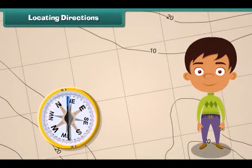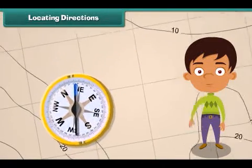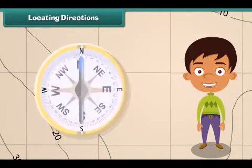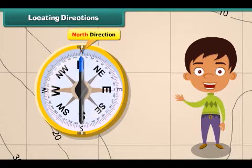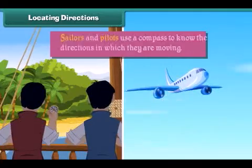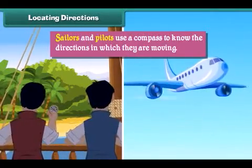Locating directions. A compass is a device that we use to find directions. A compass has a needle that rotates to indicate direction. The head of the needle always points towards north and the tail towards south. Sailors and pilots use a compass to know the directions in which they are moving.